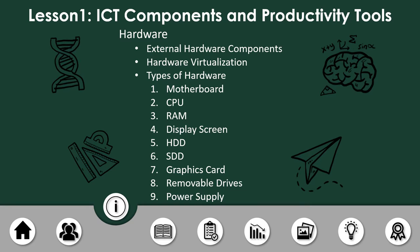One kind of hardware is the external hardware components. External hardware components are examples of hardware that we can remove from our device. Examples are speakers, flash drives, compact discs, and so on. You just attach or insert them when you need them, and they can be removed. Even when removed, they will not compromise the function of the device itself. Those are external hardware components.